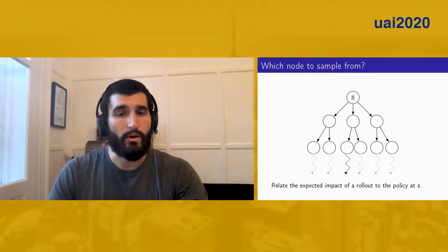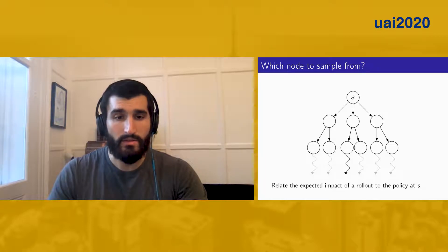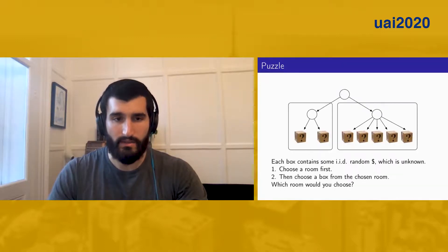In essence, we want to choose a computation, that's a rollout, that will have the biggest impact on the policy at the root state s. How can we quantify this impact? First, we will address how we can estimate action values at s. Then, we will relate the computations to these action values.